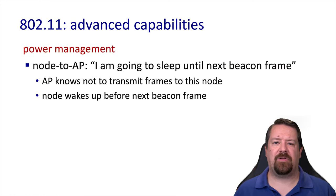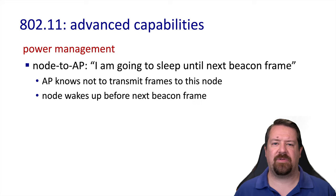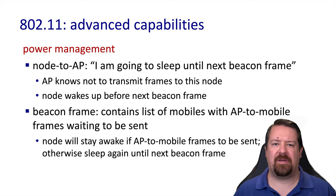Another important feature of 802.11 is power management. Since many wireless devices are battery powered and the radio can consume a significant portion of overall energy, this can significantly impact battery life. A wireless node can let the access point know it's going to turn off the radio until the next beacon frame, so the access point buffers any frames for that node. The wireless host wakes up to receive the beacon frame, which contains a list of all wireless devices that have frames waiting at the access point. If this node is on that list, it stays awake to receive its frames.